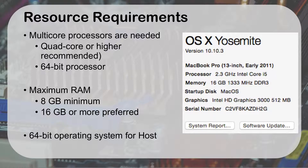A 64-bit operating system for the host is essential because it needs to be able to access all that memory. The guest can actually be 32-bit — that's fine. Here's a picture of my particular machine: I have a 2.3 GHz Intel i5, which is a dual-core processor, 16 gigabytes of RAM, and I'm running a 64-bit Mac OS X. That gives me enough to run three or four virtual machines at one time and still have them operate pretty effectively. That's probably the minimum you want if you're trying to figure out what to buy to build a virtual machine.